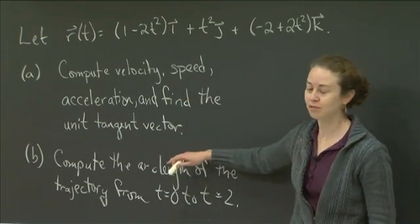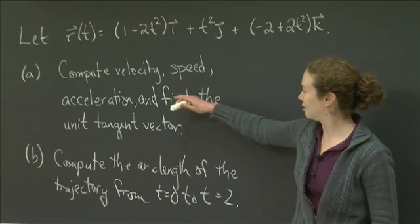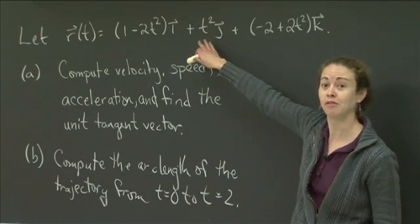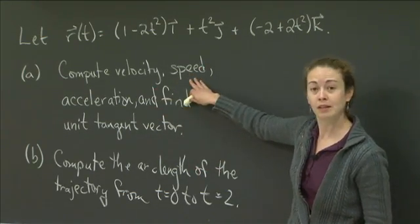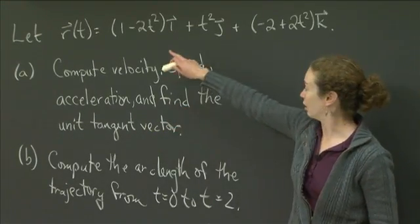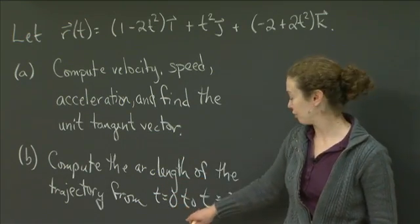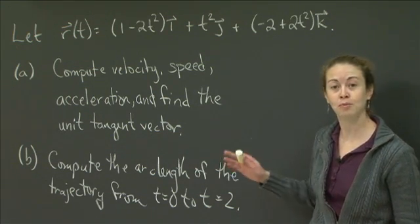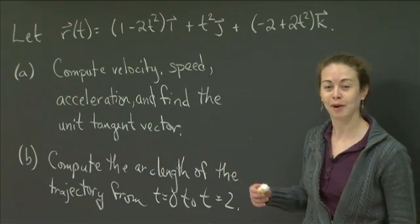And I'd like us to do the following two things. This problem is pretty much just a computational problem. We want to make sure that we know what these things are, how you define them, and how you get from the position vector to each of these things. So we want to compute the velocity, the speed, the acceleration, and find the unit tangent vector for r(t). And then the second part, we want to compute the arc length of the trajectory from t equals 0 to t equals 2. So I'll give you a moment to do that problem. Why don't you pause the video, work on the problem, and when you're ready to check your work, bring the video back up and I'll show you how I do it.